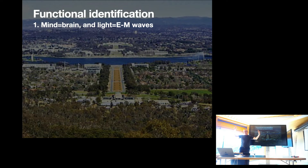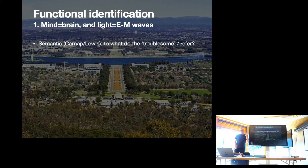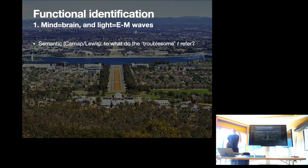Here are the two ways of thinking about what's going on that merge together. There's the way Lewis presents it, which is in a semantic mode. The question, thinking about it from a logical point of view, is: you've got some theory, and there are some theoretical terms in it, and the question is what do they refer to? That's the semantic way of thinking about it. I'll also talk about the ontological mode of looking at this question. These are not incompatible, just different ways of framing things.